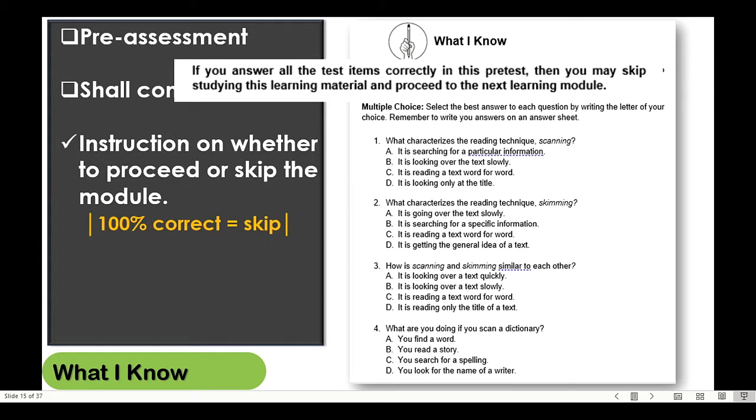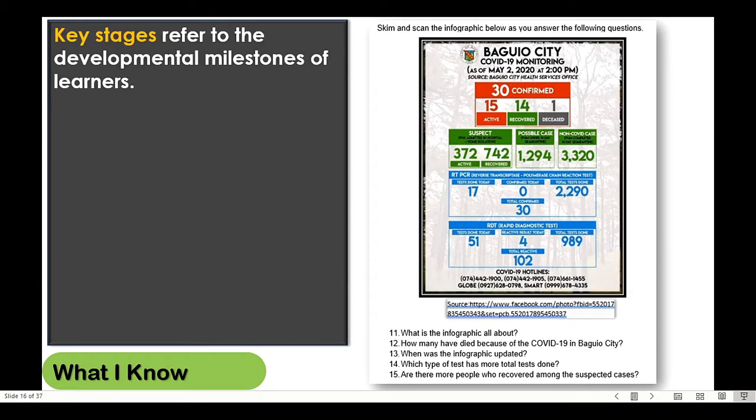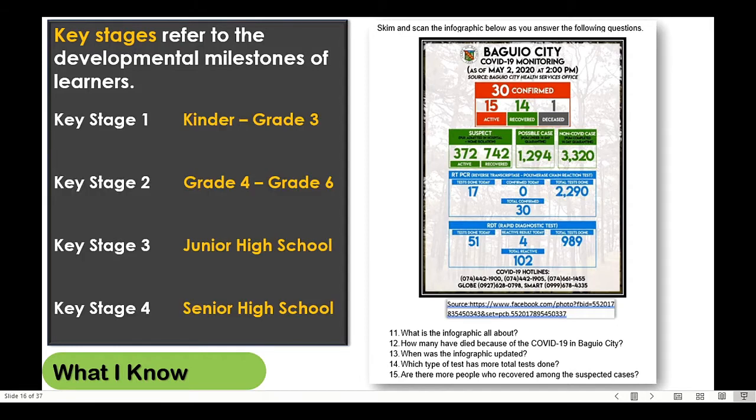Furthermore, the number of items for the pre-test should be aligned with the corresponding key stage. What are these key stages? The key stages pertain to the developmental milestones of learners. Key stage 1 refers to kindergarten to grade 3. Key stage 2 is grade 4 to grade 6. Key stage 3 the junior high school or grade 7 to grade 10. And key stage 4 refers to the senior high school or grade 11 to grade 12.